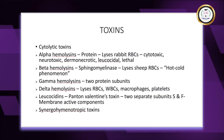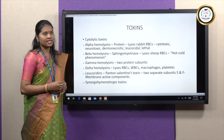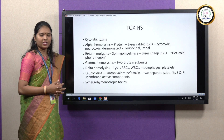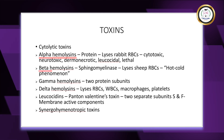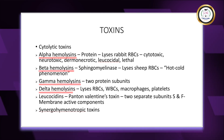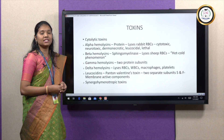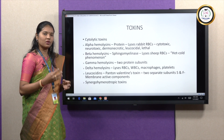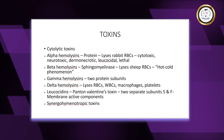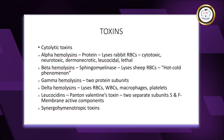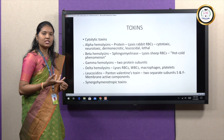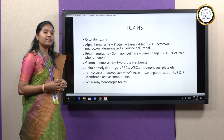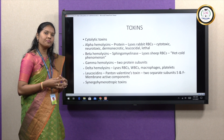Coming to the toxins that cause intoxications in host cells — there are five types of cytolytic toxins: alpha hemolysins, beta hemolysins, gamma hemolysins, delta hemolysins, and leukocidins. Alpha hemolysins are proteins able to lyse rabbit red blood cells but unable to lyse human or sheep RBCs. They are cytotoxic, neurotoxic, dermonecrotic — causing necrosis to skin and surrounding tissues — leukocidal, toxic to WBCs, and lethal to cells.